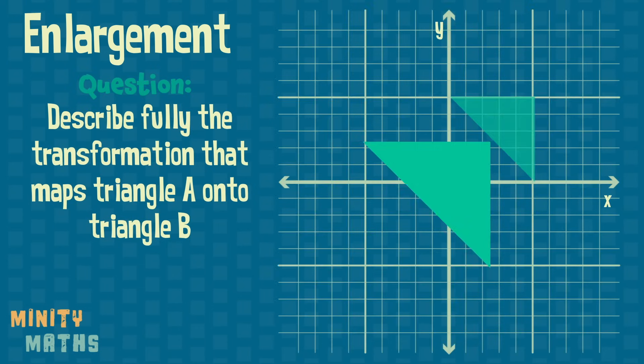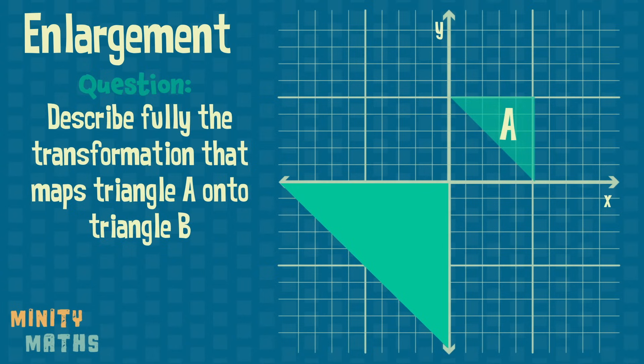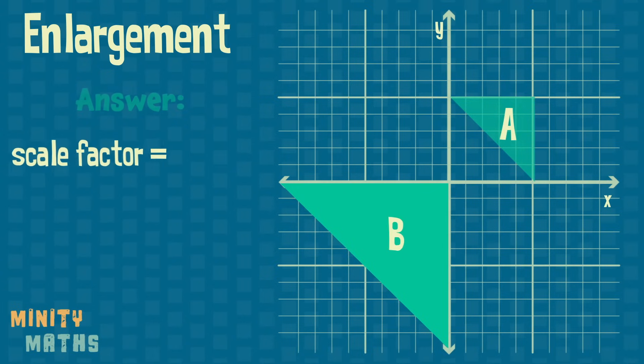We can find the scale factor by measuring the length of one side of both the new and old shapes. We can then divide the new length by the old length.